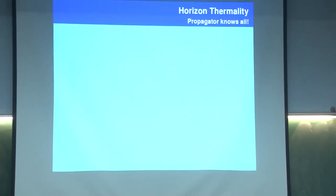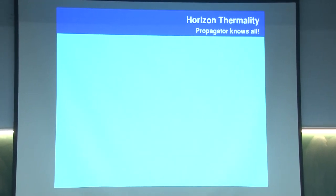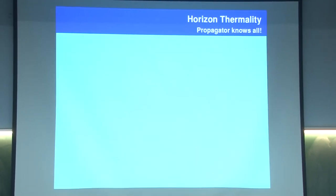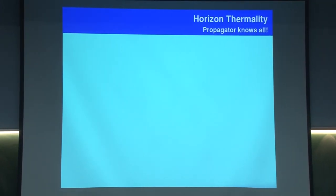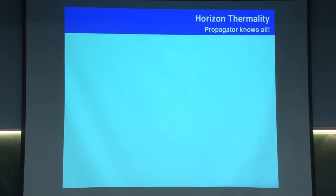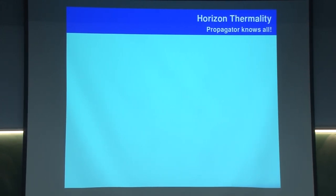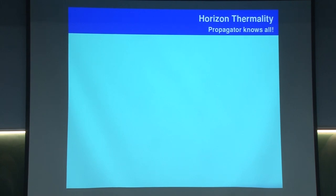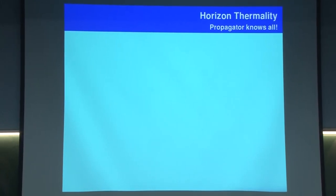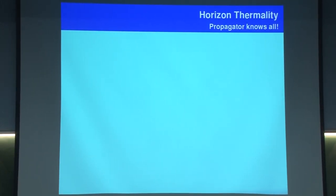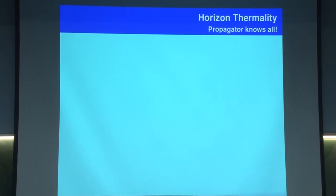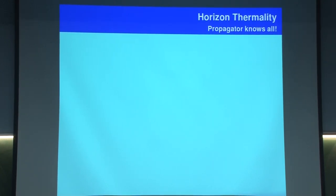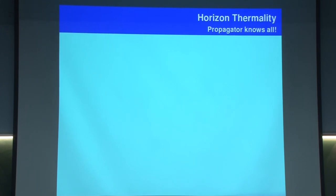We spend an enormous amount of time calculating what is the relativistic particle propagator G(x1, x2). This is supposed to encode all that you need to know about a quantum field theory in flat spacetime. This is a generally covariant object which means I can write it down in any coordinate system I like. So if some strange phenomenon like thermality of a horizon is taking place, this propagator must contain that information — it is just that we have to extract it.